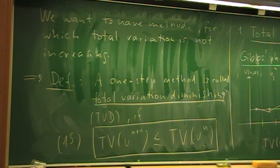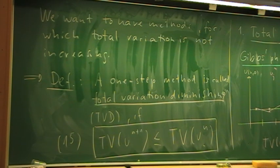So if we have the TVD property, something like the Gibbs oscillations cannot happen. We stop here for 15 minutes.